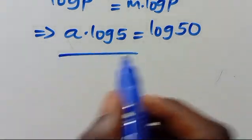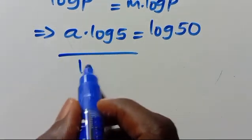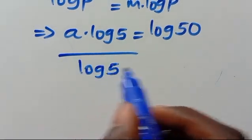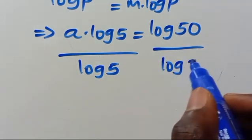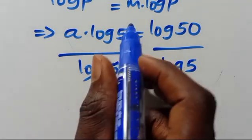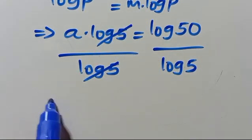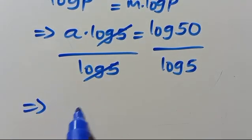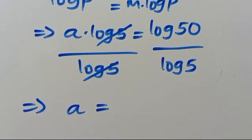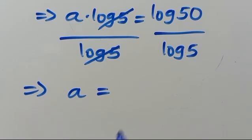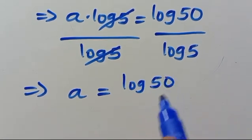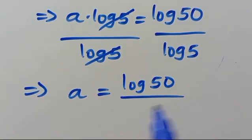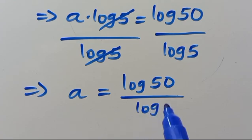So from here, dividing both sides by log 5, we cancel out log 5 on the left, giving us 1 times A. Here we have A equals log 50 over log 5.